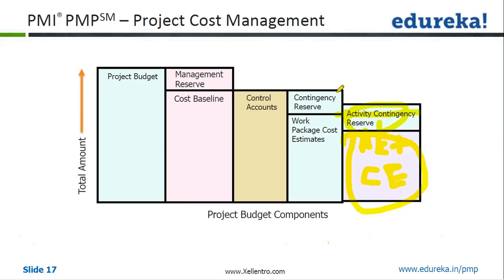At the work package level you may have a contingency reserve, and when you add all the work packages and their related contingency reserves, you get the control account level. One work package plus one contingency reserve gives you one control account related cost. Multiple work packages form one control account, and multiple control accounts added together give you your cost baseline. Once you get the cost baseline, you add the management reserve to arrive at your project budget.